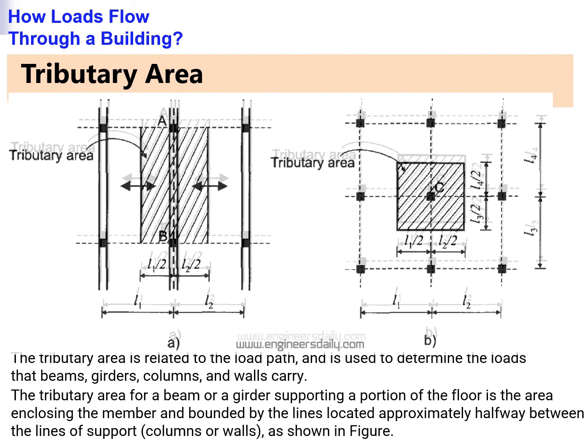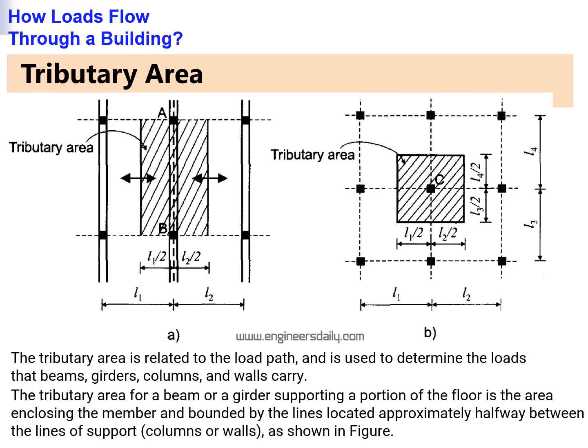The tributary area is related to the load path and is used to determine the loads that beams, girders, columns, and walls carry. The tributary area for a beam or girder supporting a portion of the floor is the area enclosing the member and bounded by lines located approximately halfway between the lines of support — columns or walls — as shown in the figure.